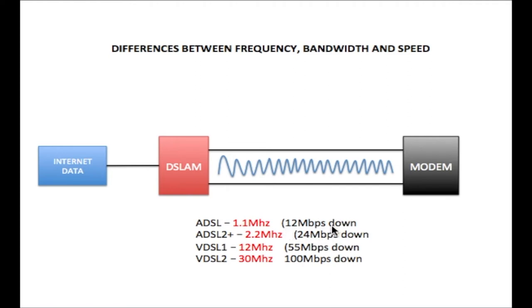This 12 megabits per second is also the speed. Both the bandwidth and the speed are measured in bits per second. So this 1.1 megahertz generates a bandwidth which is the amplitude of your signal and it sends that signal from the DSLAM to the modem at 12 megabits per second, which is the speed. So both the bandwidth and the speed is 12 megabits per second.